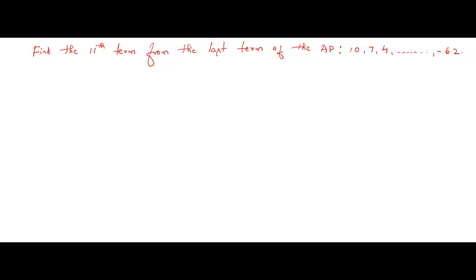Here the question is asked for you to solve. Let me first read the question: Find the 11th term from the last term of the AP 10, 7, 4 and so on, and the last term is minus 62. The question is asking you to find the 11th term — but from where? We have to find the 11th term from the last term.